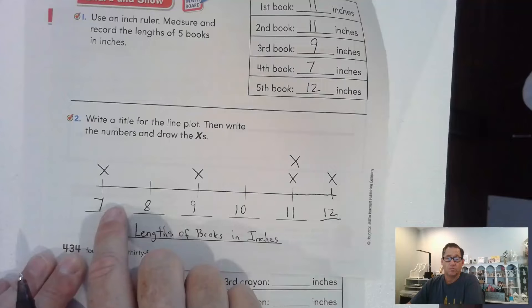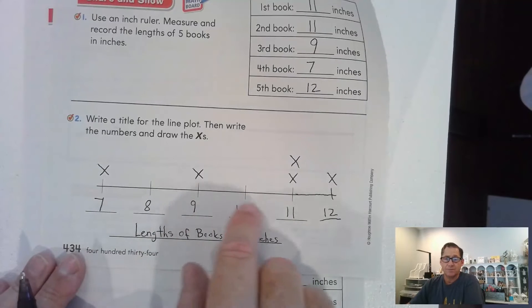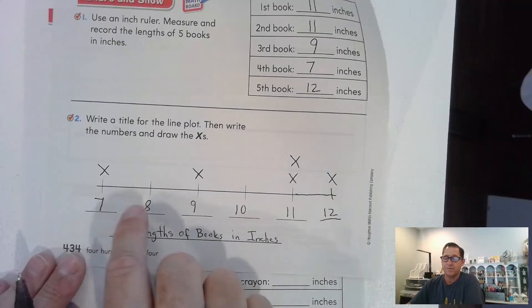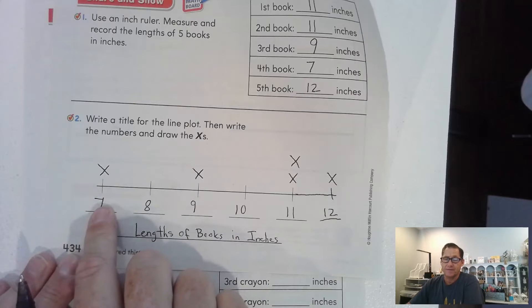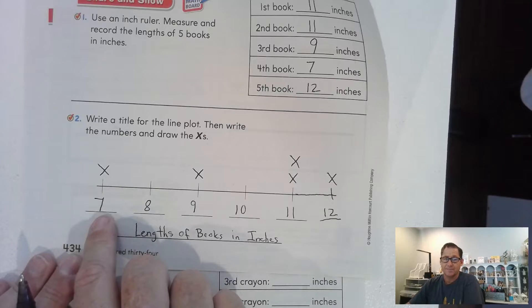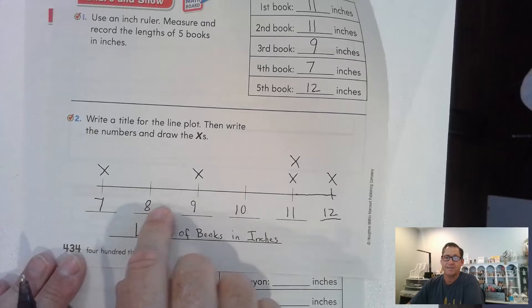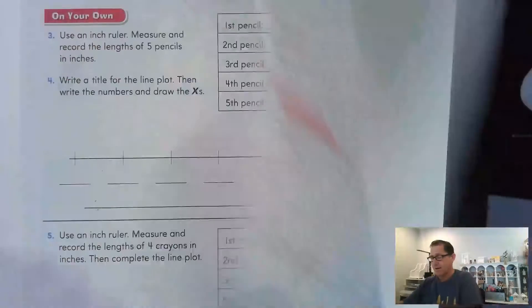Keep in mind that the numbers going across are not the number of books — they're the length of the book. So seven means books that are seven inches, eight means books that are eight inches, and so on. Let's go to page 435.